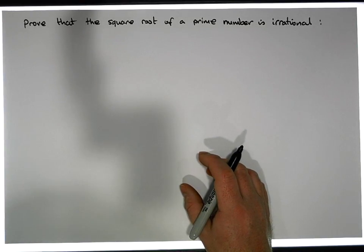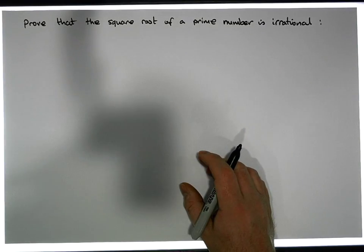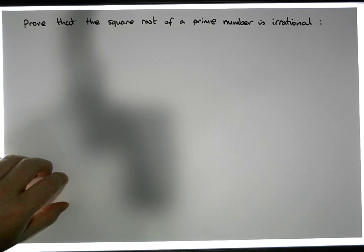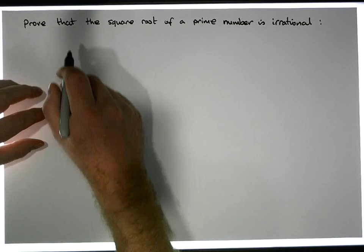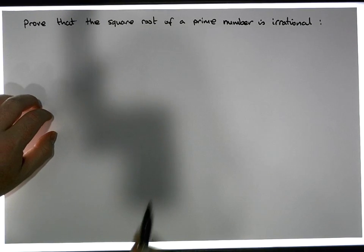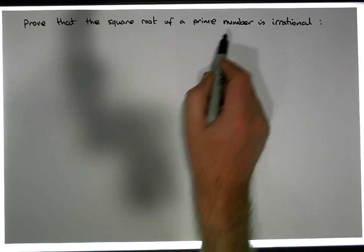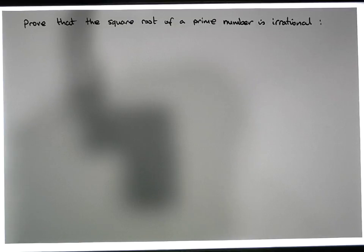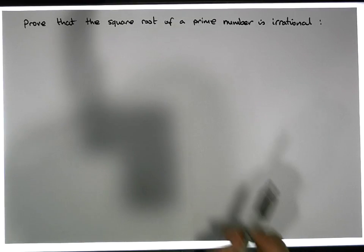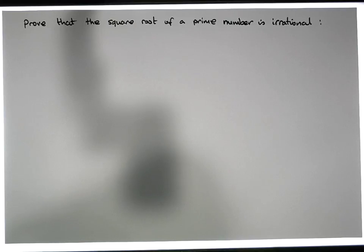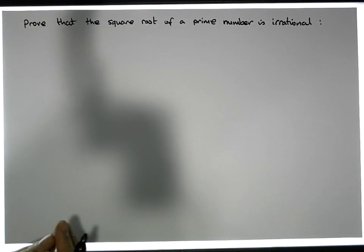Hi guys, this is Jonathan Lambert with the Mathematics Development and Support Service at the National College of Ireland. In this short video we want to attempt to prove that the square root of a prime number is an irrational number. We want to show that the square root of a prime number cannot be represented as a fraction or as a rational number, and that the square root of all prime numbers are in fact irrational numbers.